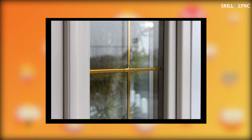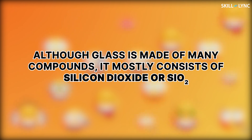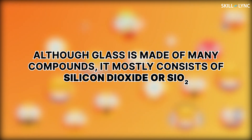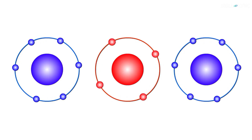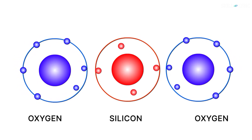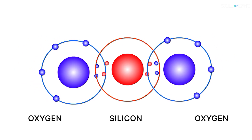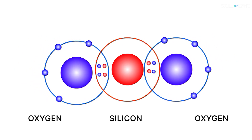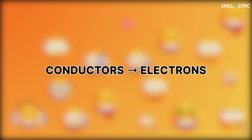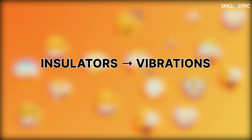Let's take an example of glass. Although glass is made of many compounds, it mostly consists of silicon dioxide, or SiO2. Silicon forms a covalent bond with two oxygen atoms — here, instead of donating an electron, silicon shares its electrons with oxygen. This means all the electrons in the atom are bonded and are not free, so there are no delocalized electrons. Insulators transfer heat by means of vibration rather than electrons.